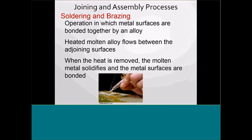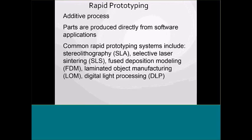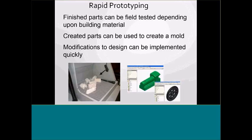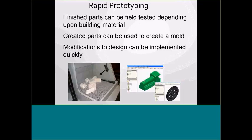In elastomers, I cover about four hours on plastics. Soldering and brazing I briefly cover. For prototyping, I have a video on the additive process: prototypes, SLAs, and FDMs. The finished parts can be tested depending on the building material. We're in the process of buying three new 3D machines — we already have a small one in our design lab.